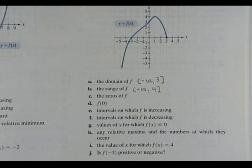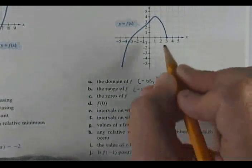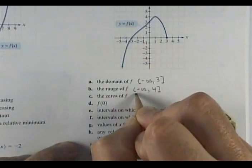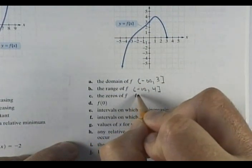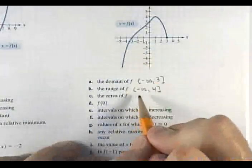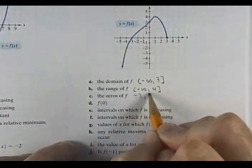Now your zeros are the same thing as what, somebody? Your x-intercepts. Remember, your zeros are the same thing as your x-intercepts. So I have two x-intercepts or two zeros. What are they? Alright, so since they didn't ask for intercepts here, you could just put negative three and three.